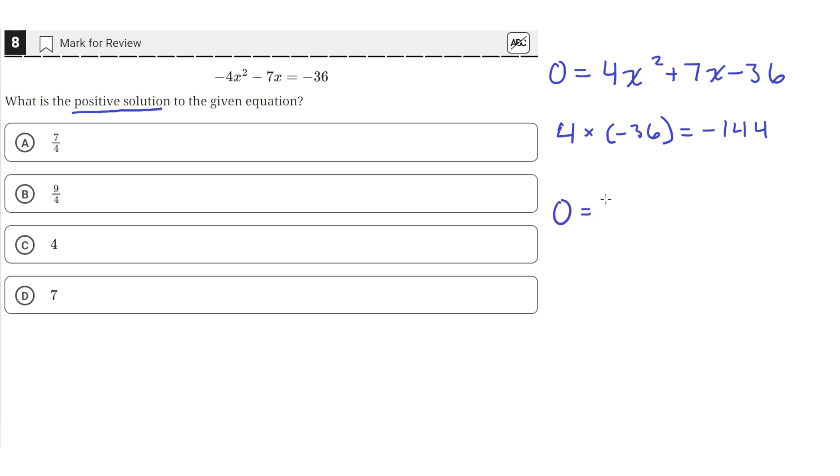So in this case, we'll split the 7x into 16x and negative 9x, and then we'll keep the negative 36. So 16 minus 9 is equal to 7, but 16 times negative 9 is also equal to negative 144. And we did that because that allows us to factor by grouping. You won't be able to factor every quadratic using this method, but many of them will be factorable by grouping.